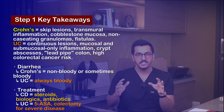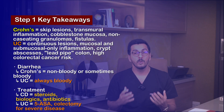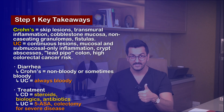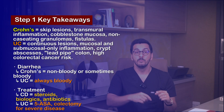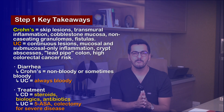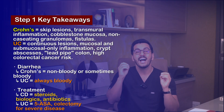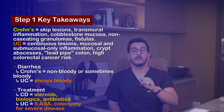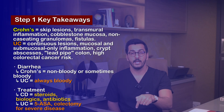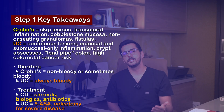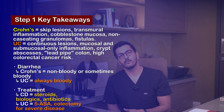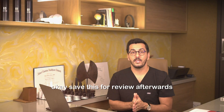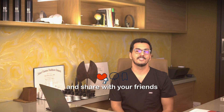Key takeaways for Step 1: Crohn's disease equals skip lesions, transmural inflammation, cobblestone mucosa, non-caseating granulomas, and fistulas. Ulcerative colitis equals continuous lesions, mucosal and submucosal only, crypt abscesses, lead pipe colon, and high risk of colon cancer. Diarrhea in Crohn's may be bloody or non-bloody, but in ulcerative colitis it's always bloody and painful. Treatment: Crohn's uses steroids, biologics, antibiotics; ulcerative colitis uses mesalamine and colectomy in severe cases. Know how to differentiate these two — Step 1 will test it.